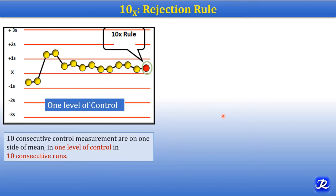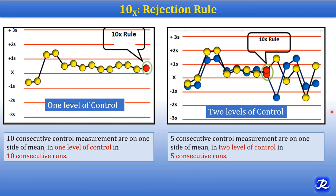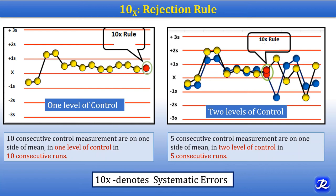In the 10X rule, if one level of control is used, ten consecutive control measurements on one side of the mean in ten consecutive runs violates the 10X rule — you can see here that ten consecutive runs have values on one side of the mean. When two levels of control are used, five consecutive control measurements on one side of the mean in both levels across five consecutive runs violates the 10X rule. This is a rejection rule that denotes systematic error.